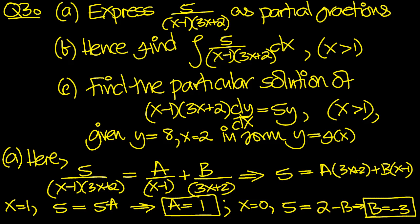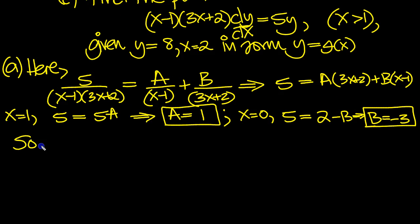So there's part A then. So answer is equal to A, which is 1 over x minus 1, plus B, which is minus 3 over the 3x plus 2. So that's part A done then.